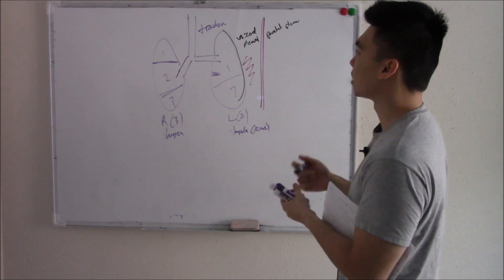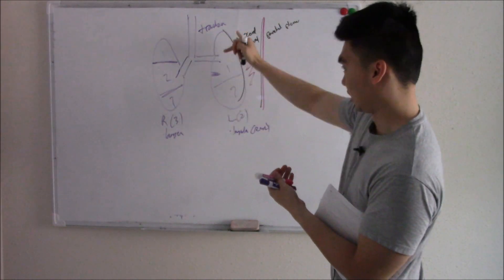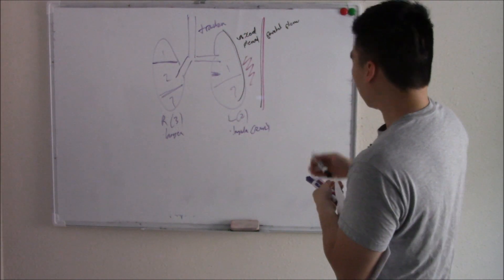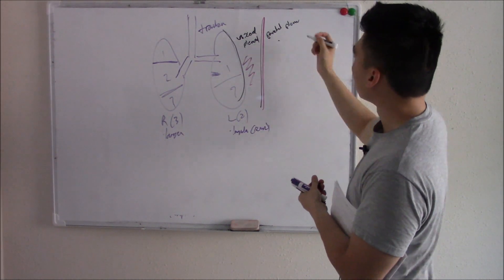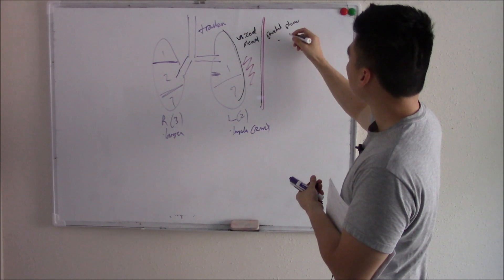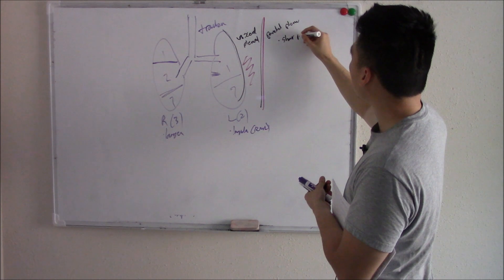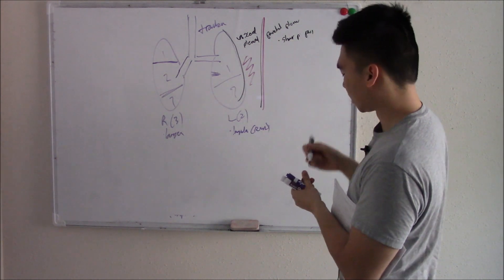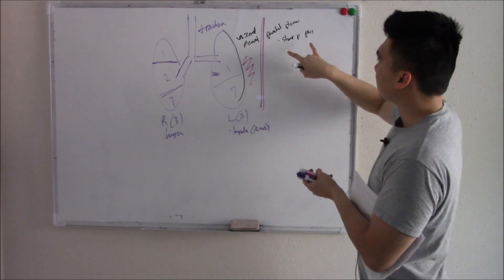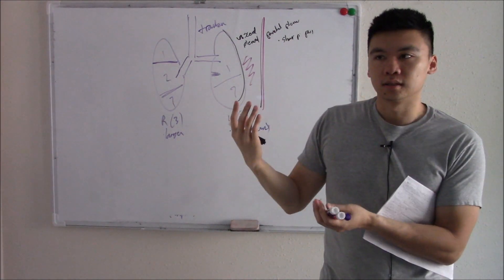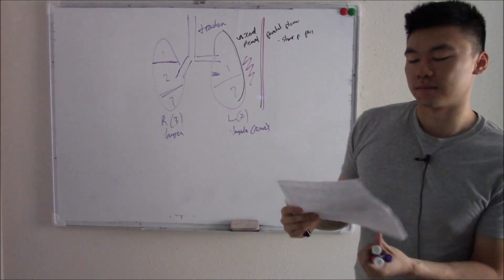Some nomenclature: visceral means internal organs — that's why the visceral pleura is attached to your lung. Parietal means attached to a wall — that's why it's attached to your chest wall. Your parietal pleura has sharp pain receptors. So if someone takes a deep breath in and feels sharp pain — like with pleuritis — it's your parietal pleura causing that pain.